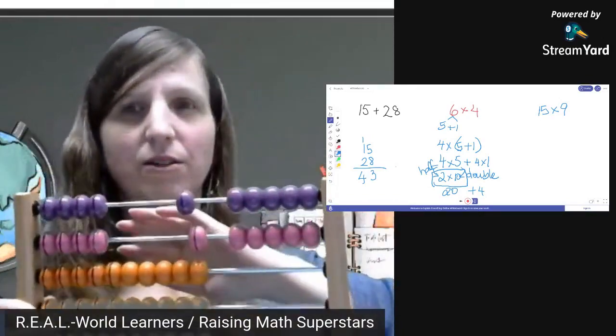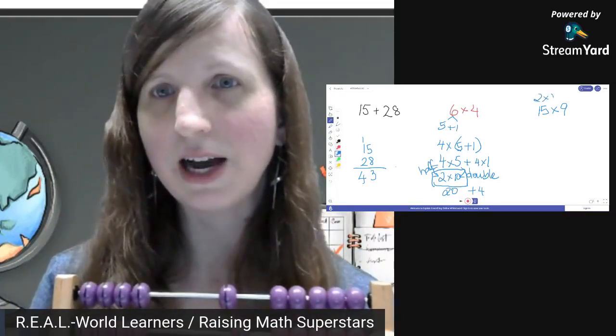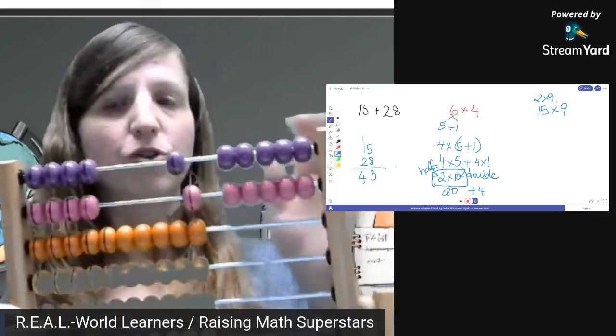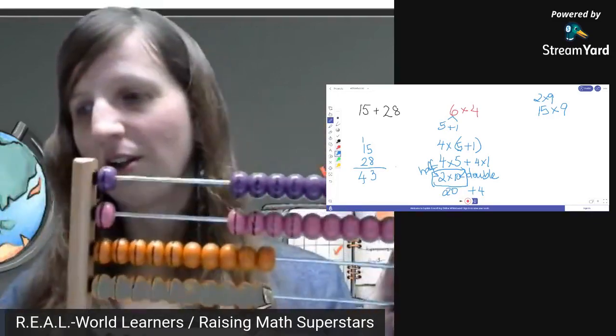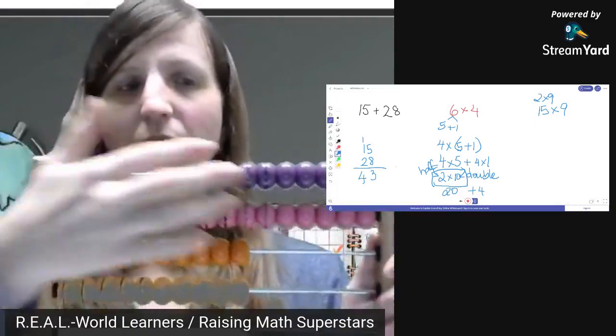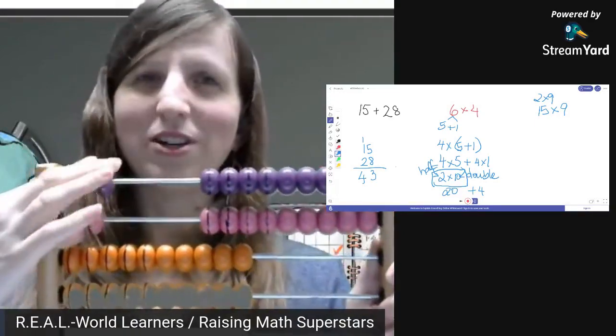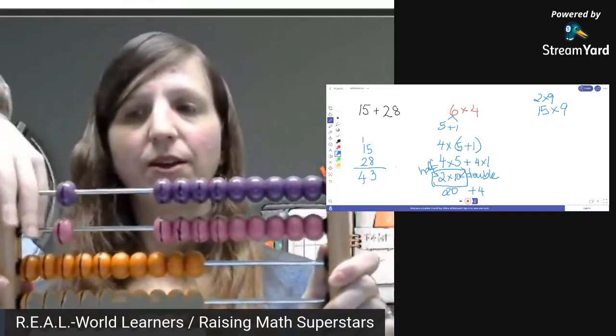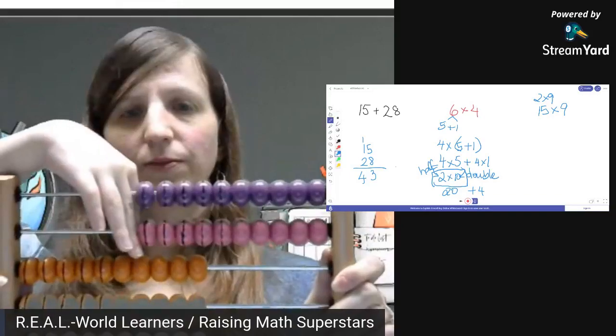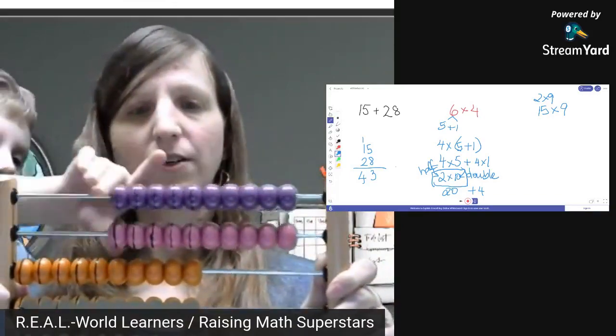If we're doing two times nine, we would pull over two groups of nine. And then we talk a lot in my classes about making that tens because nines, when they grow up, want to be tens. What would we do here? My helper's still with me.